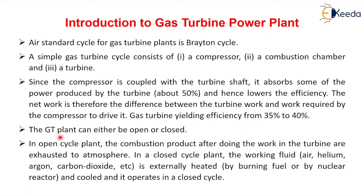The gas turbine plant can either be open or closed. In an open cycle plant, the combustion products after doing work in the turbine are exhausted to the atmosphere. In a closed cycle plant, the working fluid is externally heated, then cooled, and it operates in a closed cycle. We will study the open cycle plant and closed cycle plant in detail.